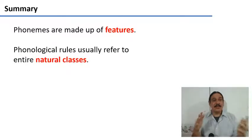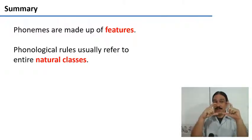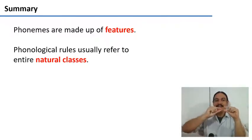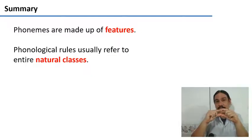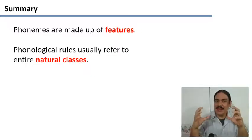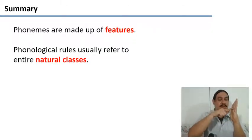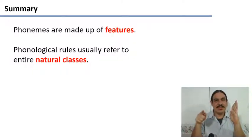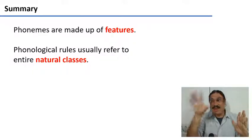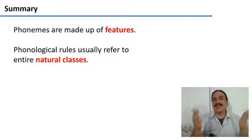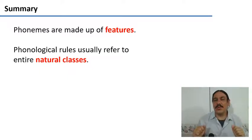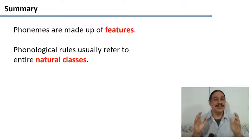So in summary, phonemes are made of features — they're bundles of features. These features are going to be very useful, first of all, to define natural classes of phonemes, and because phonological rules are usually going to use these features to describe an entire class of sounds. This is what we'll look at in the next video, where we'll look at a rule in German.